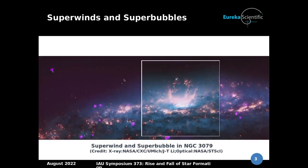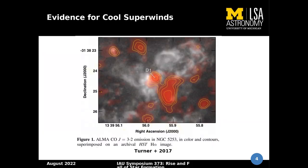Typically in star-forming regions we see the formation of superwind, and also in X-ray observations we see a large-scale super bubble. However, sub-millimeter ALMA observations suggested the formation of cool superwinds.